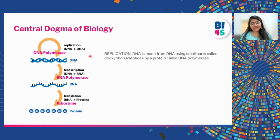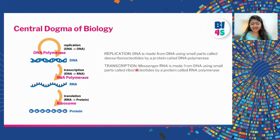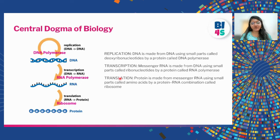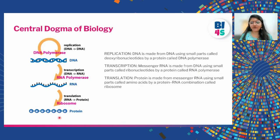The next step is transcription: messenger RNA is made from DNA. The DNA has information on how to run a cell, and that message is copied onto an RNA molecule using ribonucleotides (A, U, G, C) by a protein called RNA polymerase. From the RNA, the information of how to make proteins is transferred by a complex machinery called the ribosome — made of both protein and RNA — which reads the messenger RNA as a code to join amino acids together to form a protein.